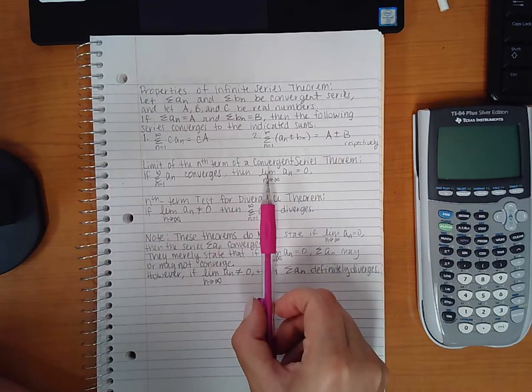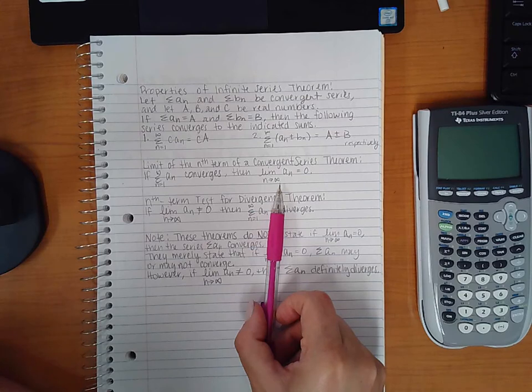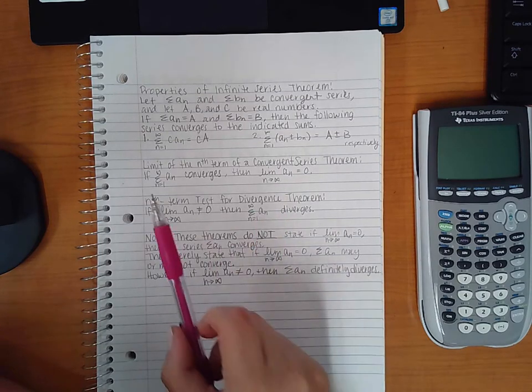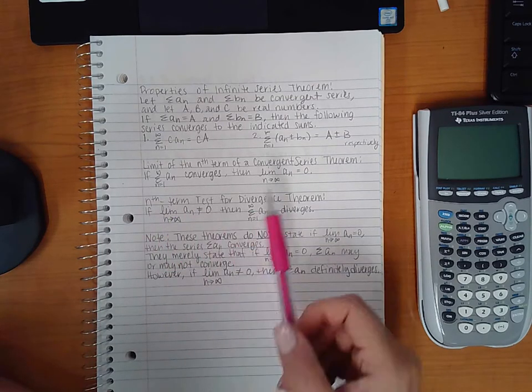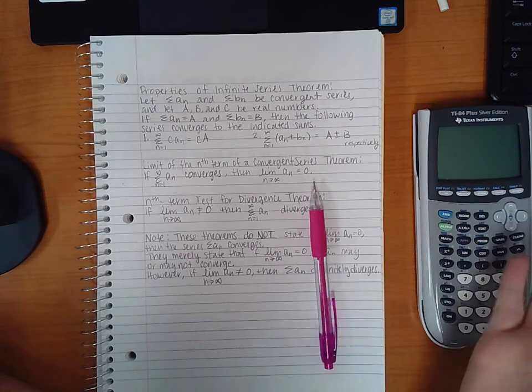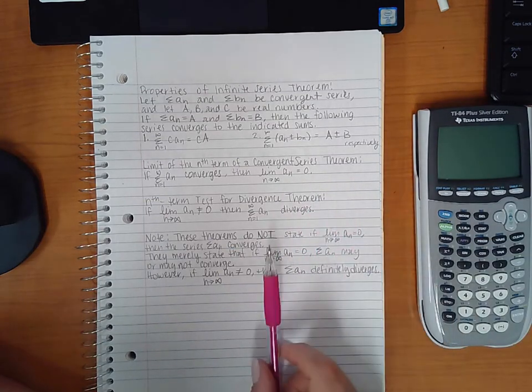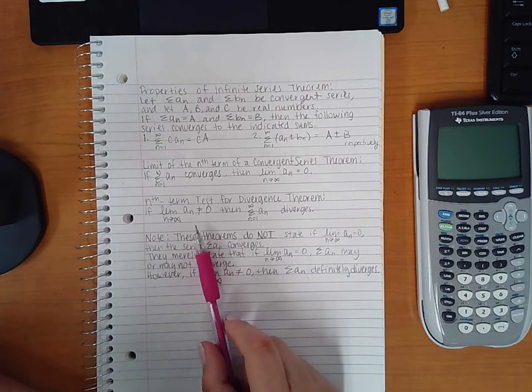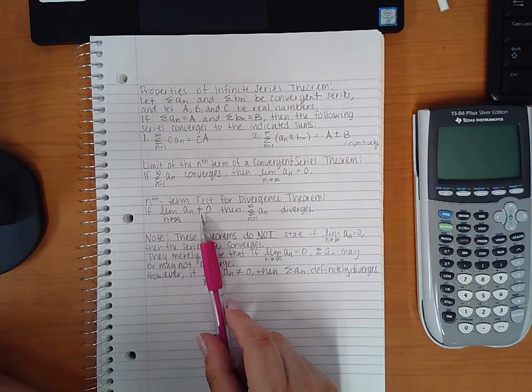If the limit is equal to zero, it does not mean that the series converges. It literally just means it may or may not. However, for this statement it's different: if it doesn't equal zero, then you know automatically for sure that it diverges.